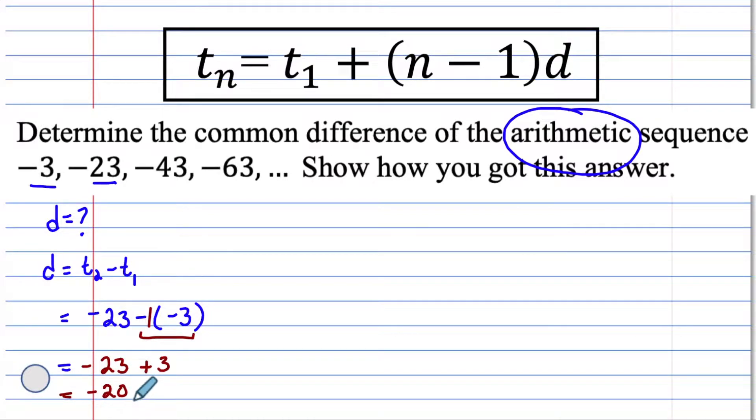Let's check using two other terms. The value of the third term is negative 43. Subtract a negative 23. And this is like a negative 1 times a negative 23, which is a positive 23. Now we have negative 43 add 23, which is negative 20. I think we're pretty confident that the d, or the common difference, is negative 20.